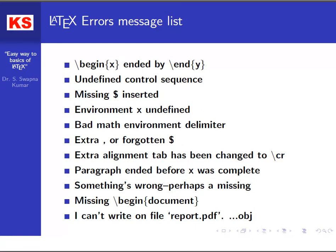Followed by next is the extra alignment tab, which has been changed to \CR. So, for example, if you want to switch over to the next row, you give a double backslash. If you give a single backslash instead, the error will prop up due to the wrong symbol in the wrong environment.